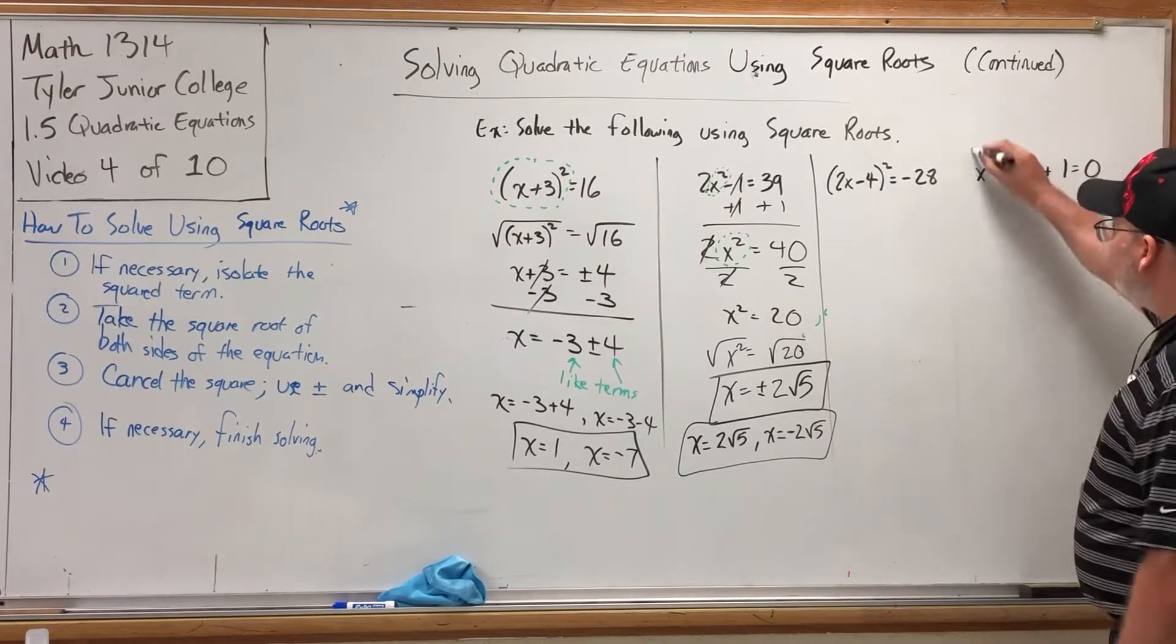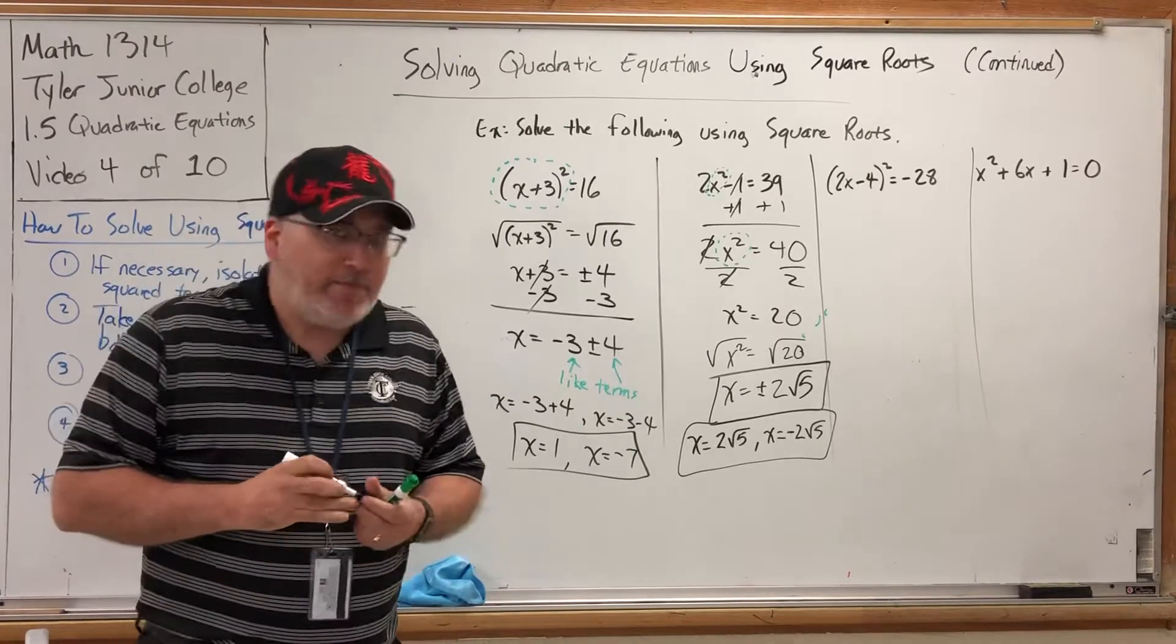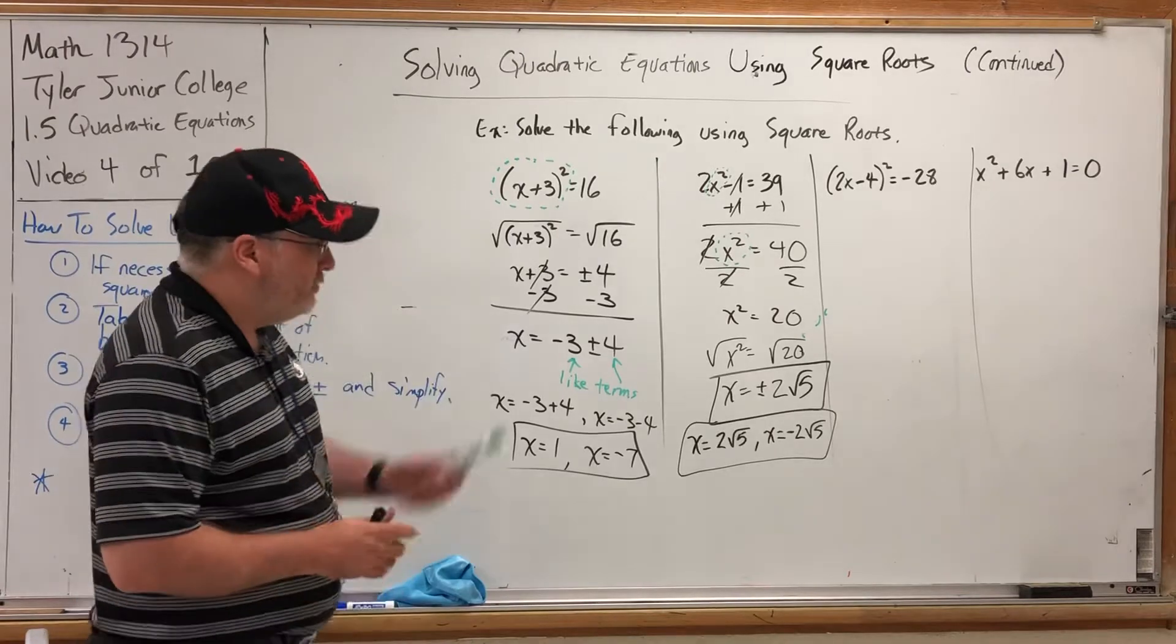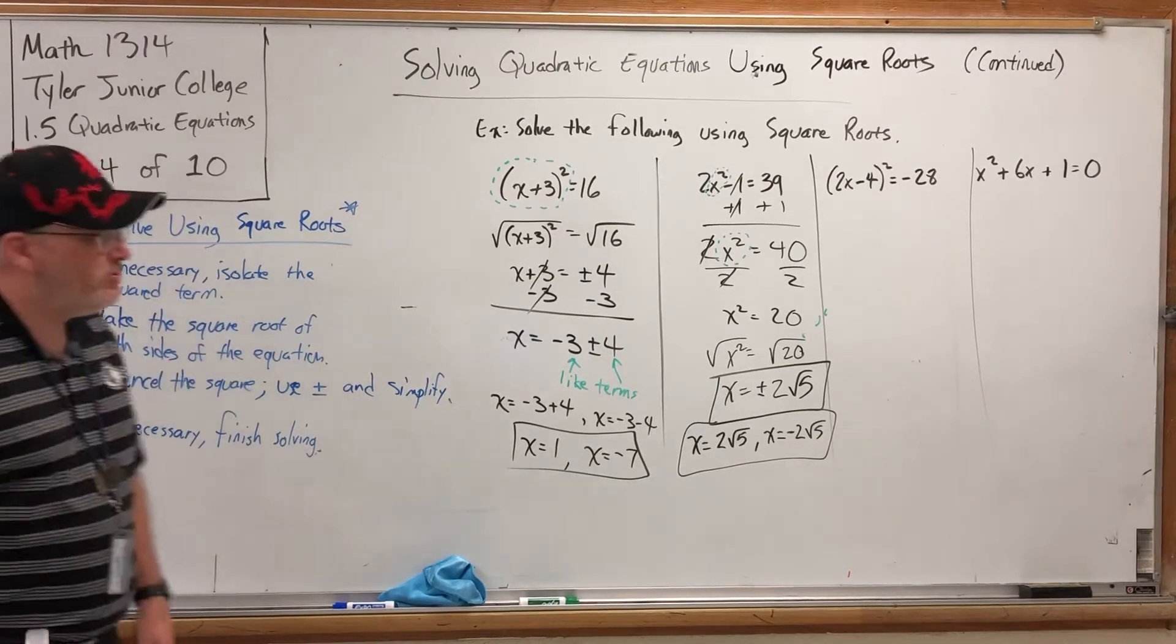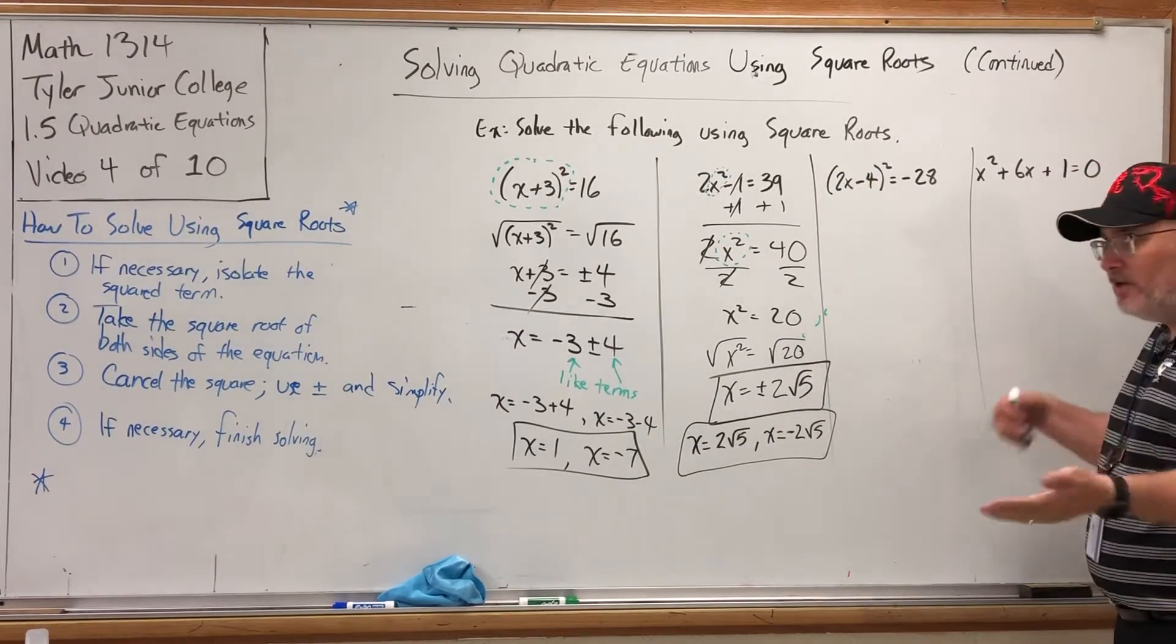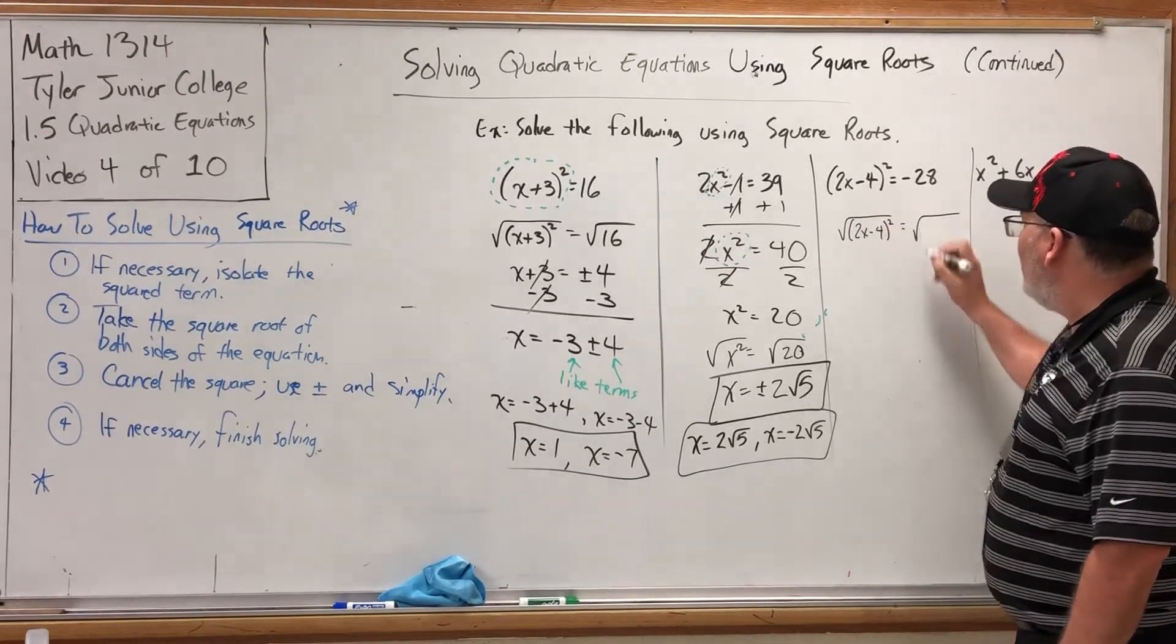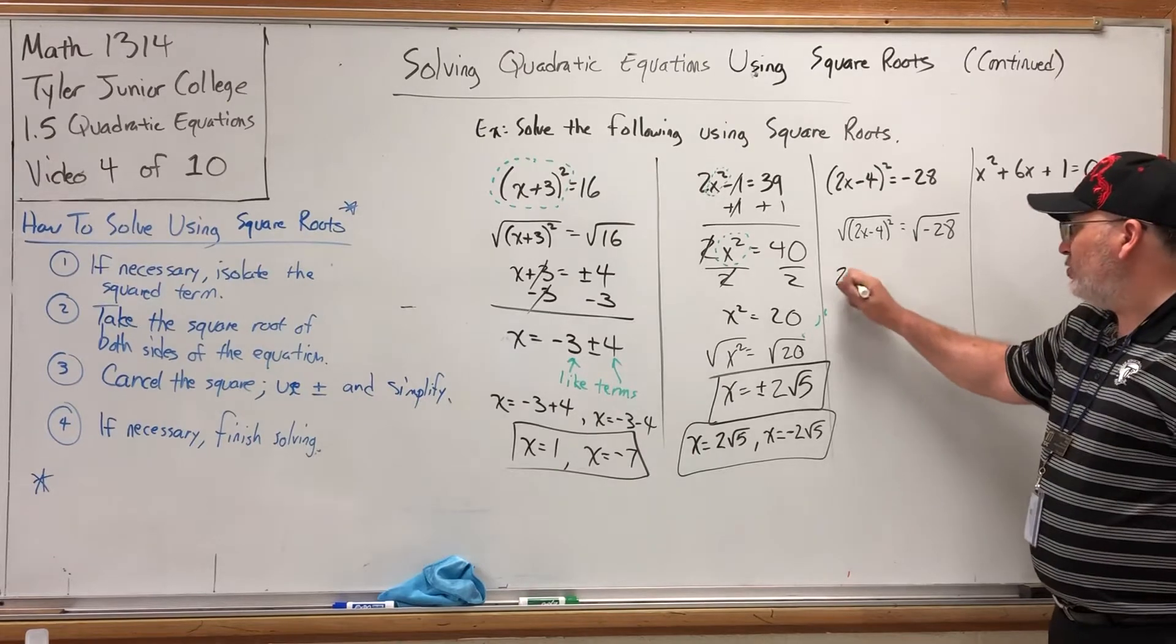Now, this one, on the other hand, let's just attack it and see what happens. You might want to pause and try that one. But I'm going to go ahead and continue. Step one: Who has the square? The parentheses and everything in it. There is nothing outside of the parentheses to require me to isolate the squared term. So I can start with step two, which is to take the square root of both sides. So the square root of (2x-4)² on the left and the square root of -28 on the right. This one will be fun.